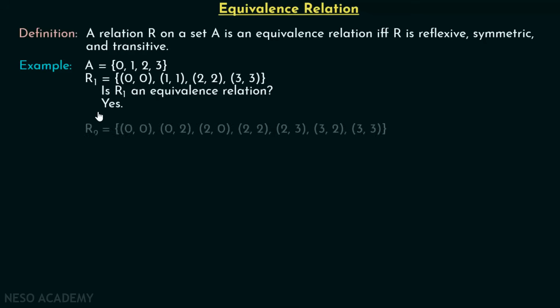Let's see R2, which consists of the ordered pairs: (0,0), (0,2), (2,0), (2,2), (2,3), (3,3) — but notice there is no ordered pair (1,1) in this relation.